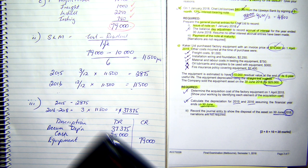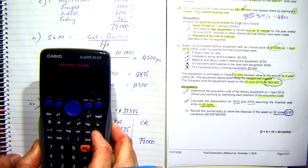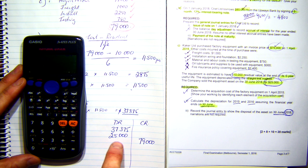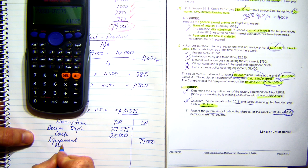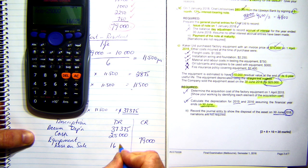79,000 minus 37,375 equals 41,625. So, therefore, I'm making a loss on my sale of... minus 25... 16,625.